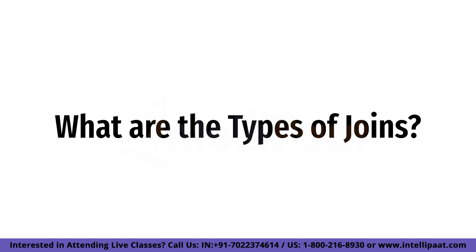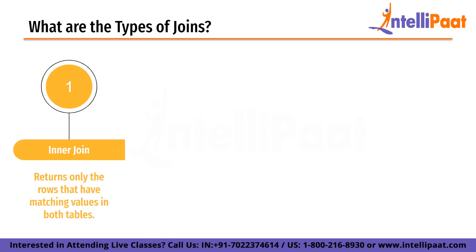Now let's look at the types of joins. Starting with inner join — inner join returns only the rows that have matching values between both tables. It is the most common type of join and is used when you want to combine data from two tables based on a common column.